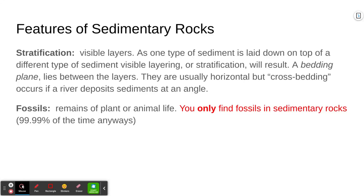Some of the large-scale features of sedimentary rocks: first, one of the major identifying features when looking at a large expanse of rock is stratification — visible layers. As one type of sediment is laid down on top of another, these different layers show up and remain visible as the rock forms. We call this stratification. The plane between two different layers is called a bedding plane. Most of the time, because sediments are typically laid down flat, bedding planes are horizontal — though they can end up cross-bedded if a river deposits sediments at an angle.